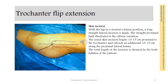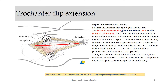Now notice the skin incision. I prefer to make a modified Gibson approach — this means the proximal incision is directed just like downward. Deepen the incision throughout the subcutaneous fat. The interval between the gluteus maximus and medius must be identified. This is accomplished more easily in the proximal portion of the wound. The fascial incision is continued distally along the iliotibial tract longitudinally. In some cases, it may be necessary to release a portion of the gluteus maximus tendinous insertion onto the femur in the distal portion of the wound.